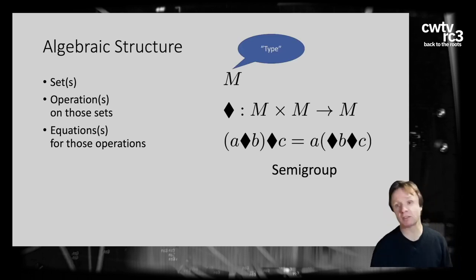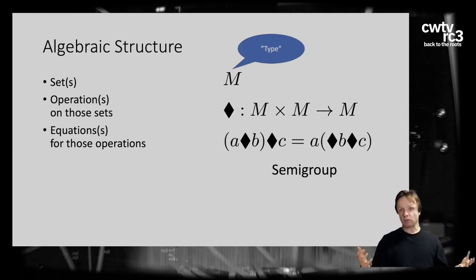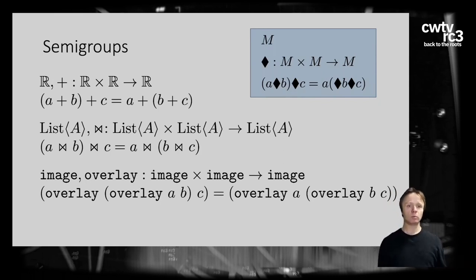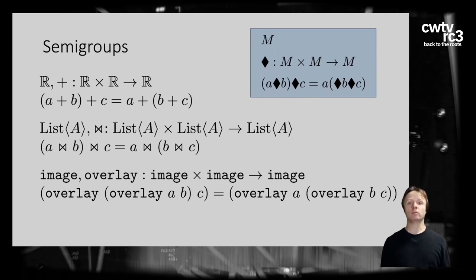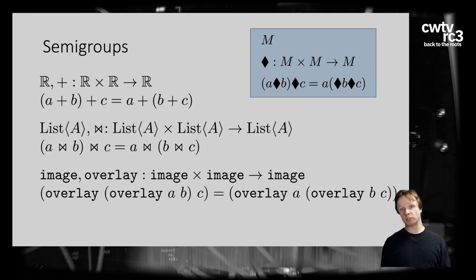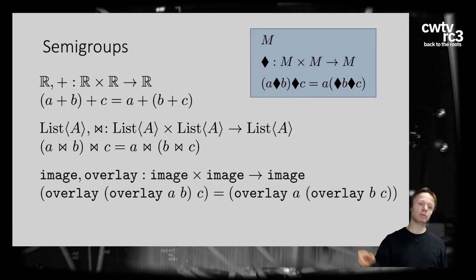This translates directly to programming: your set M in mathematics might just be a type in your program. Semigroups occur in lots of places. The real numbers with plus form a semigroup; lists with concatenation fulfill associativity and form a semigroup; the overlay operation on images takes two images and returns one image with associativity, so images with overlay form a semigroup. Beside and above do the same.